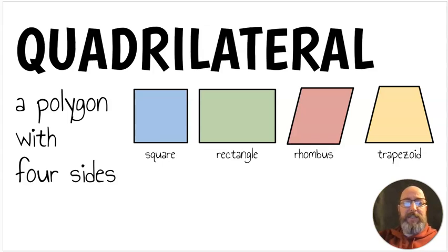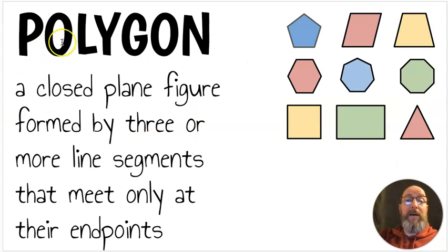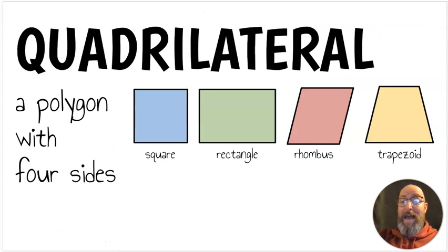Next, we're going to get into some shapes, some geometry. We have a quadrilateral. A quadrilateral is a polygon with four sides. And a polygon, that's actually going to be our next definition. Let's go to that one first. A polygon is a closed plane figure, which basically means flat, two-dimensional, formed by three or more line segments, which is the sides, that meet only at their endpoints. So all of these shapes up here are different kinds of polygons. A quadrilateral is a type of polygon that has four sides, like a square, a rectangle, a rhombus, and a trapezoid.